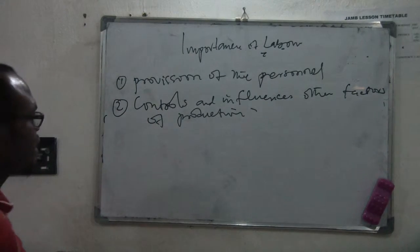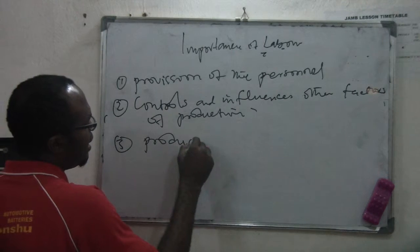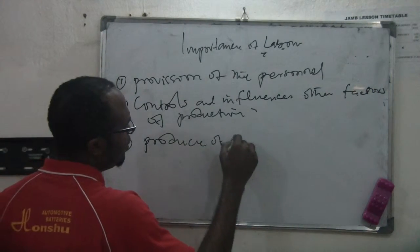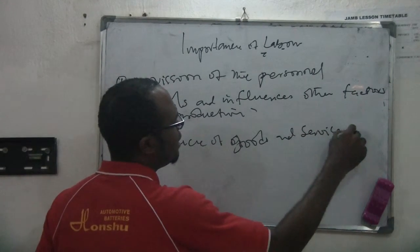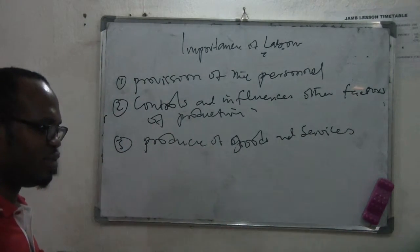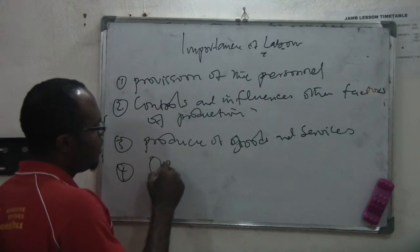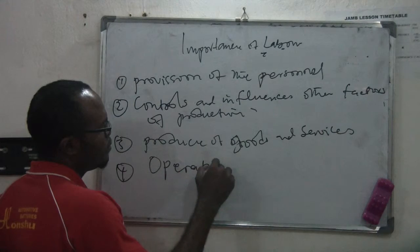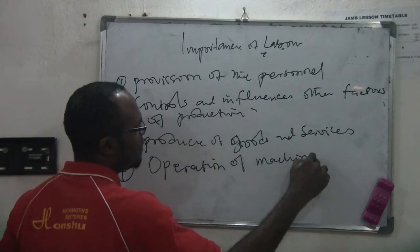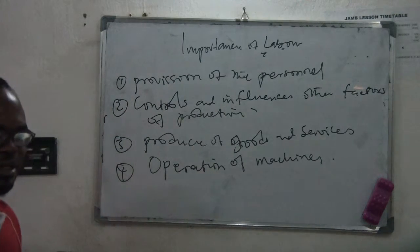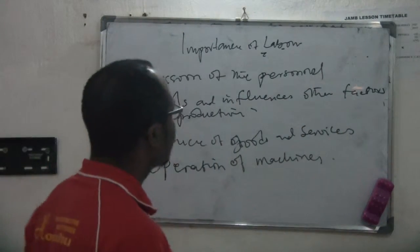Production of goods and services — it is labor that does the actual production of goods and services. If you have your land and your materials, without labor there will be no production. It is also labor that operates the machines that you have.